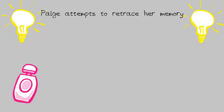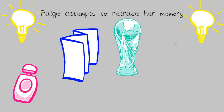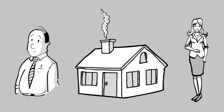Paige attempts to retrace her memory by smelling perfumes, rereading the vows she wrote on her brochure, revisiting her art studio, and exploring the city. She begins to get too overwhelmed in such unfamiliar surroundings, so she returns home to her parents.